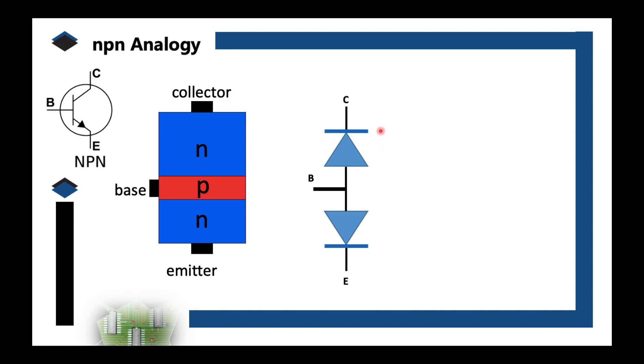So the top, that's your collector. The middle one is the base. This one is the emitter. As you can see, their cathodes are common, they're just connected. And so if I draw the schematic symbol, it could look like this.